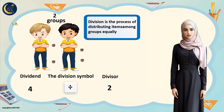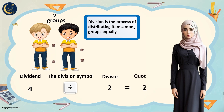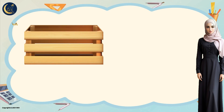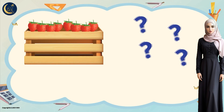Let's read the division sentence: four divided by two. How much is it? Each of them took two pieces of chocolate, so four divided by two equals two. We will call this result the quotient.